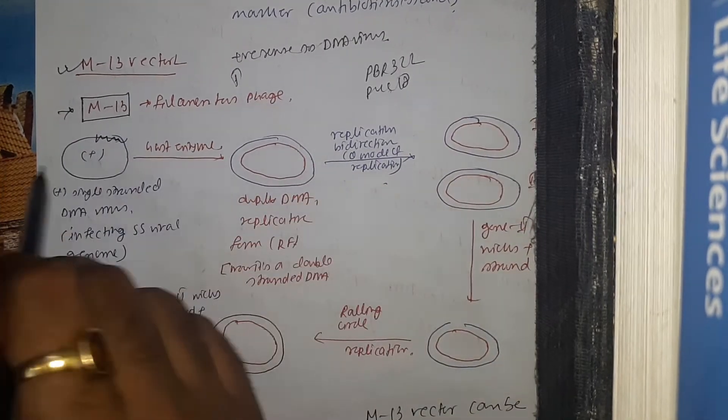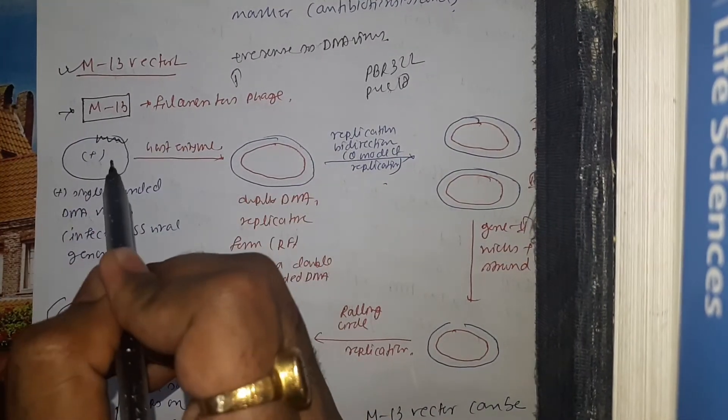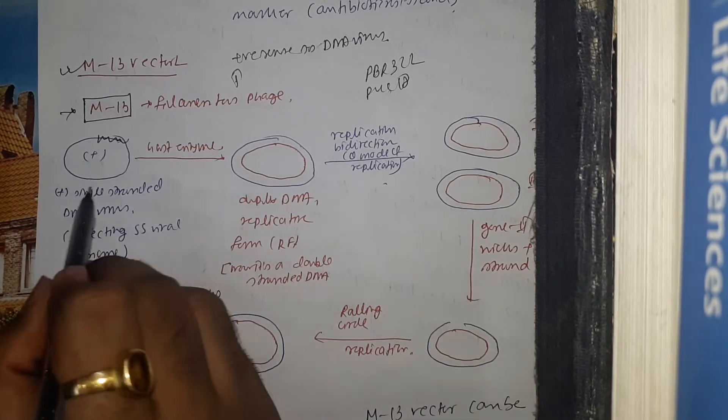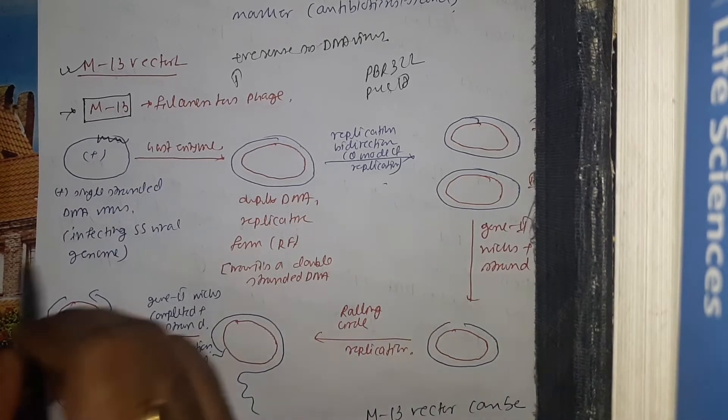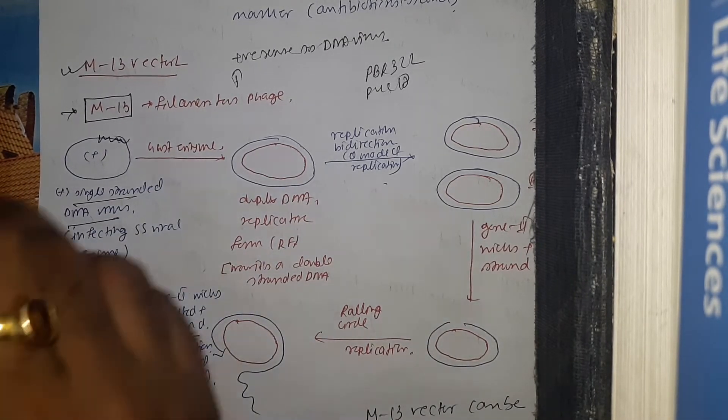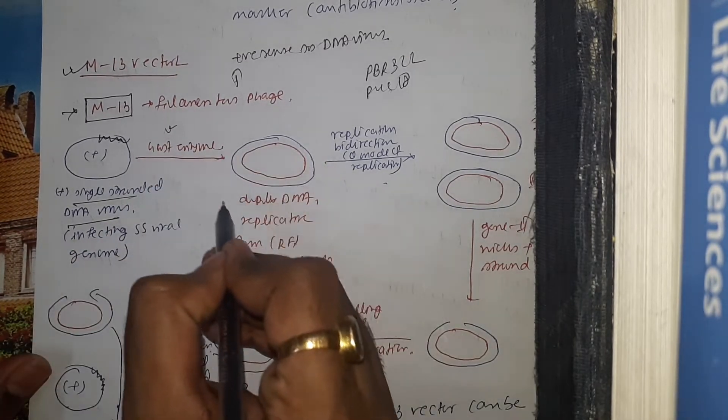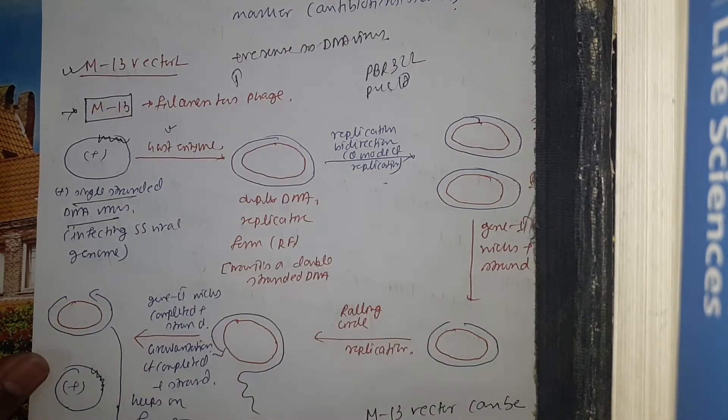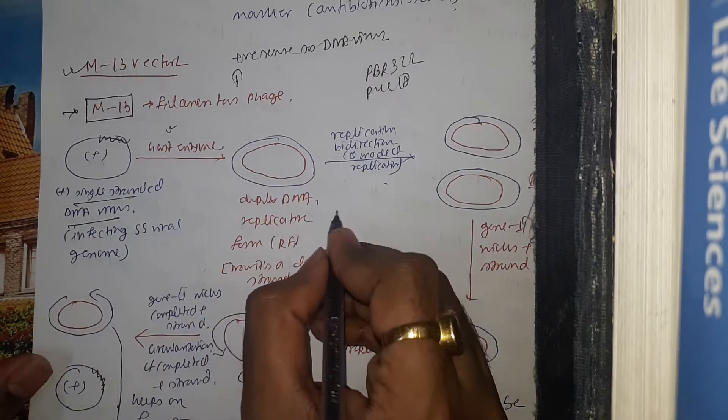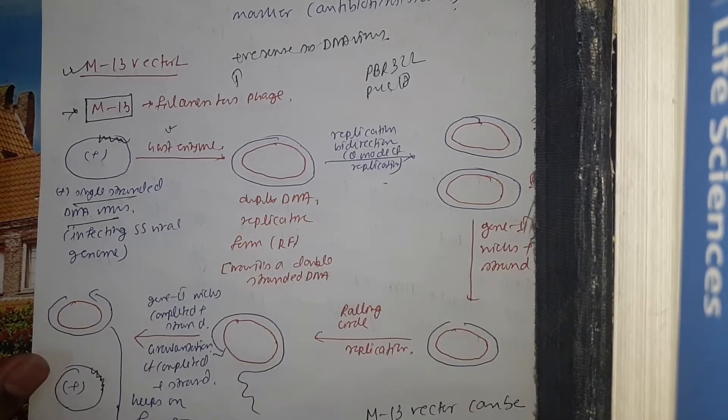As we all know, virus will inject their genomic material inside the host. This is the positive single-stranded DNA virus of M13. In presence of host enzyme, it will convert into a duplex DNA replicative form. Some will also call it duplex DNA RF.